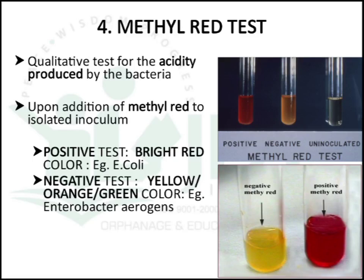The next test is the methyl red test, a qualitative test for acidity produced by the microorganism. Upon addition of methyl red to an isolated colony, a positive organism gives a bright red color — for example, E. coli. A negative organism gives yellow, orange, or green color.